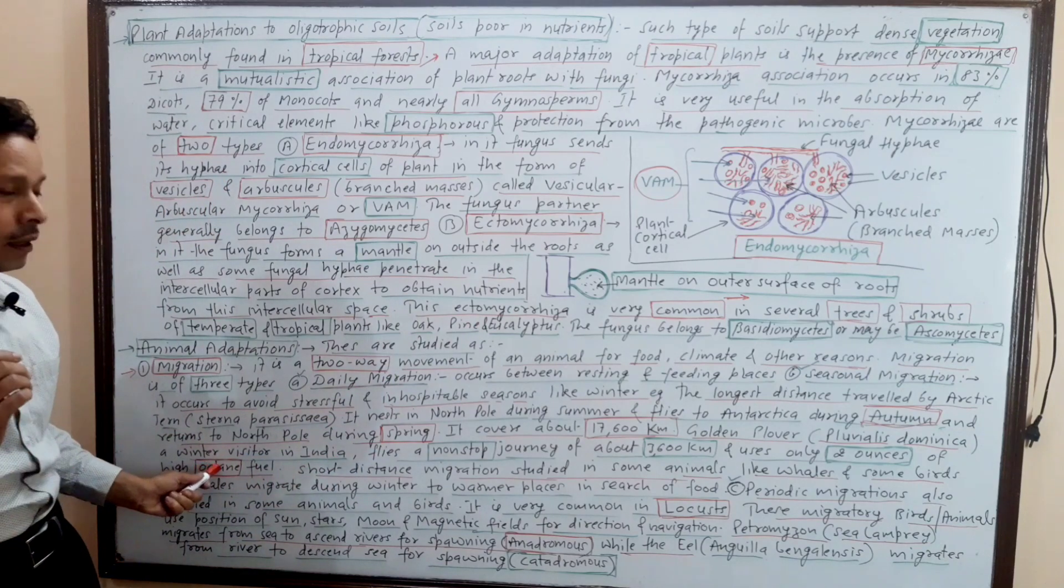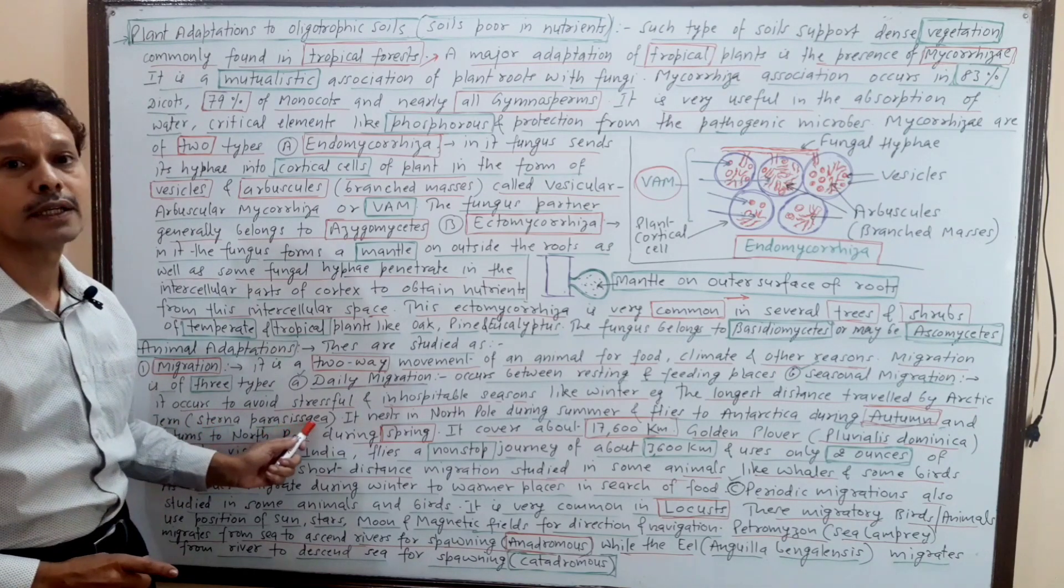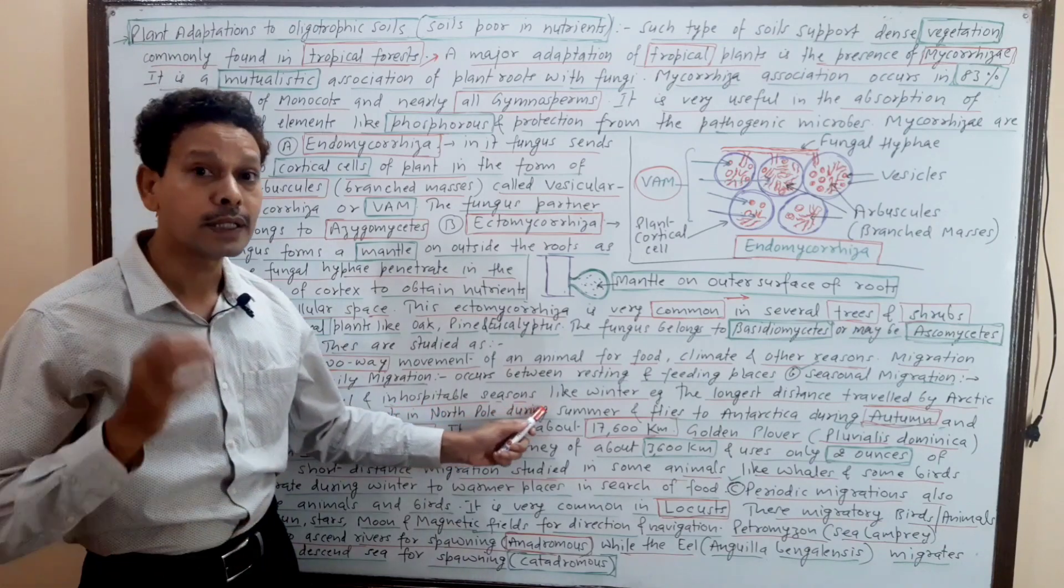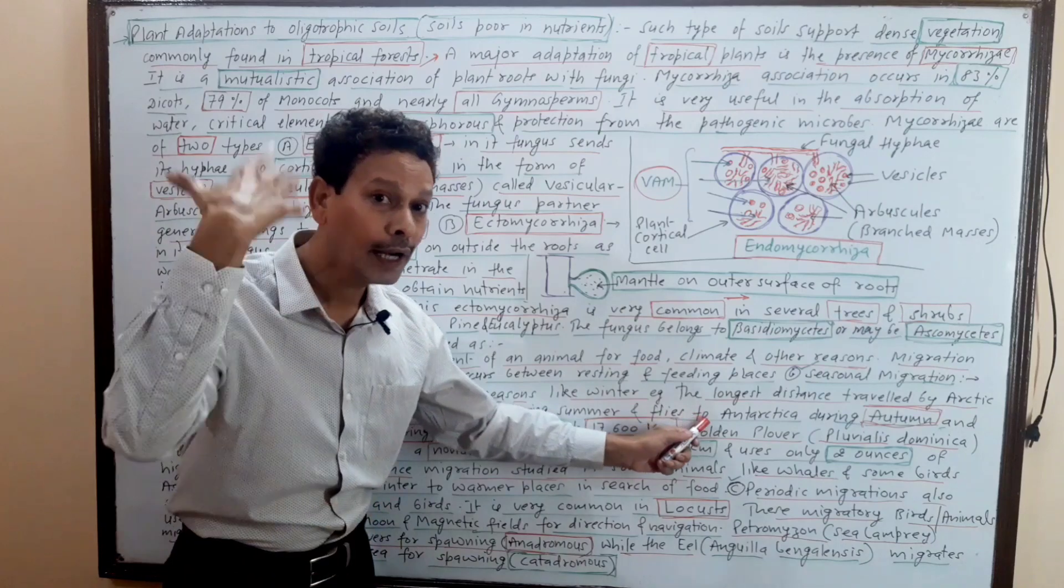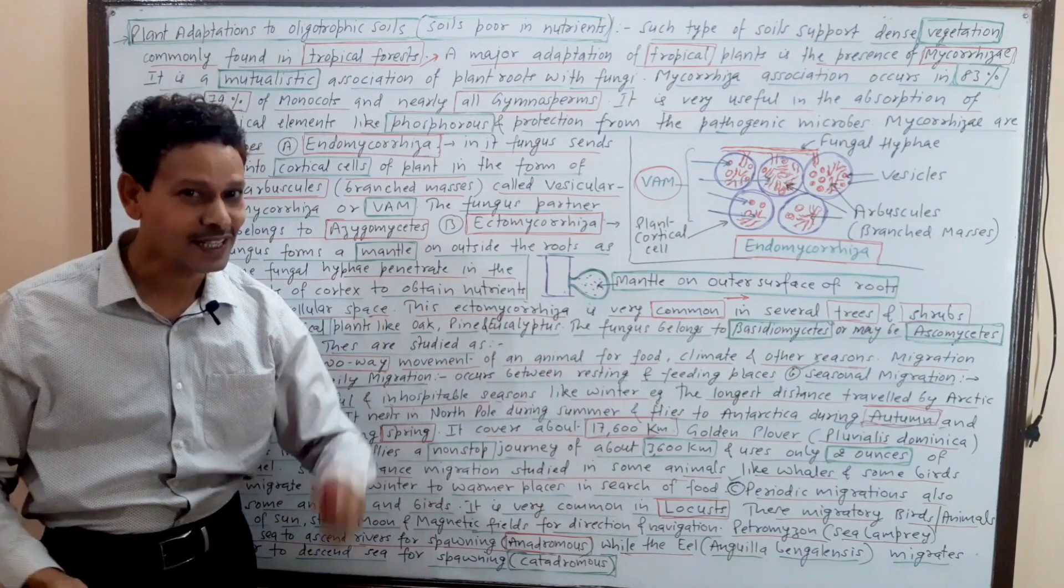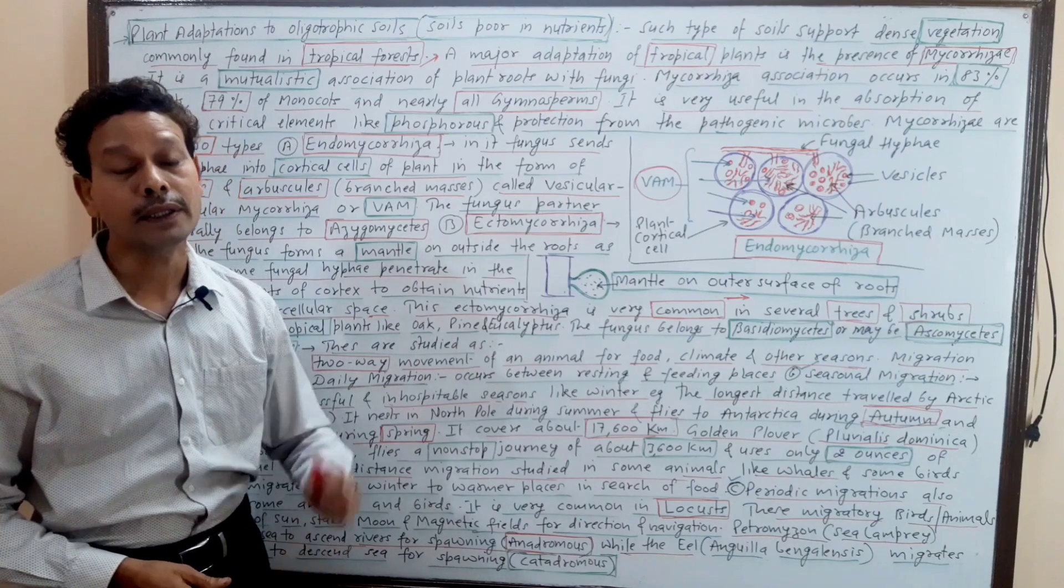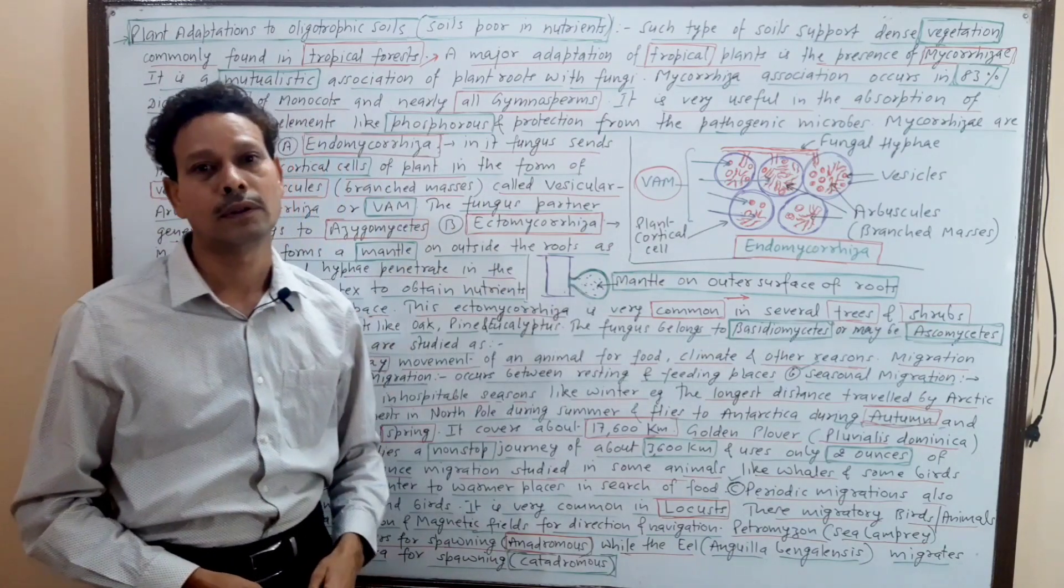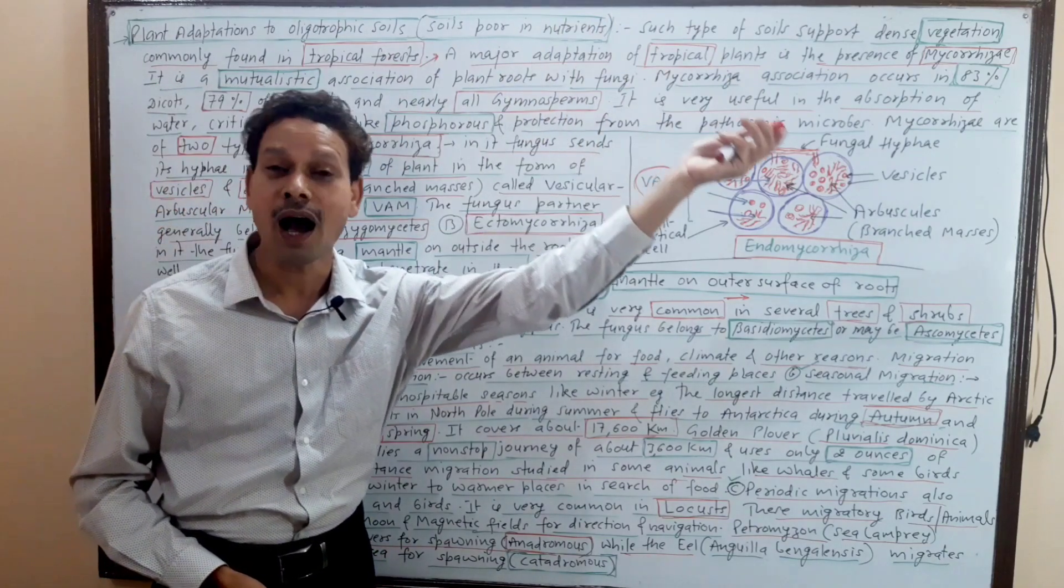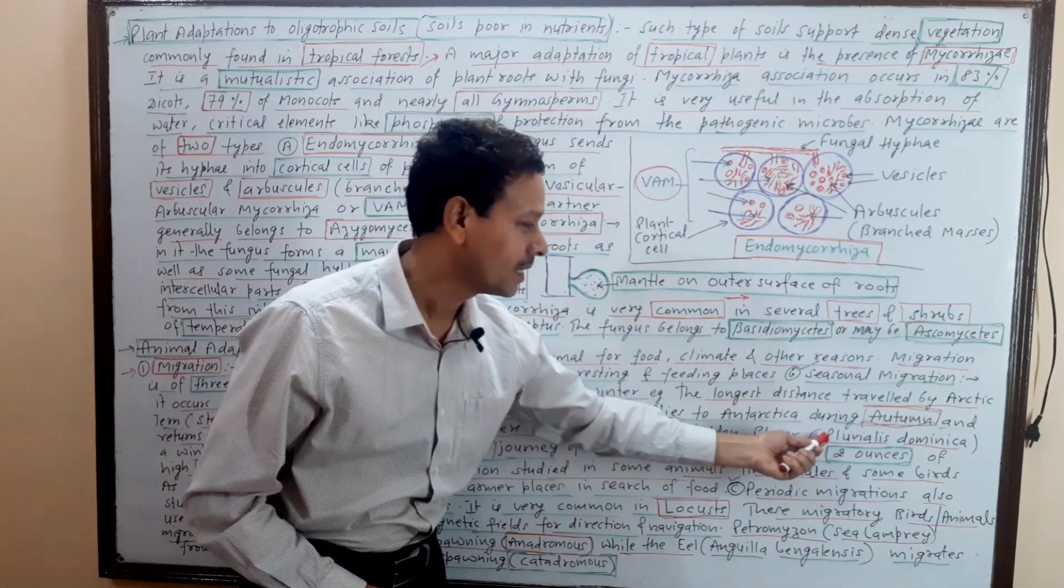The longest distance is covered by this champion bird - the arctic tern. Competition students, focus on arctic tern. This arctic tern, scientifically Sterna paradisaea, nests at the North Pole during summer season and flies to Antarctica, migrating during autumn season and returning back in spring season. It covers about 17,600 kilometers. It is such a long distance - North Pole to South Pole.